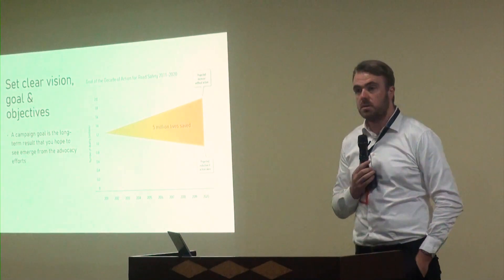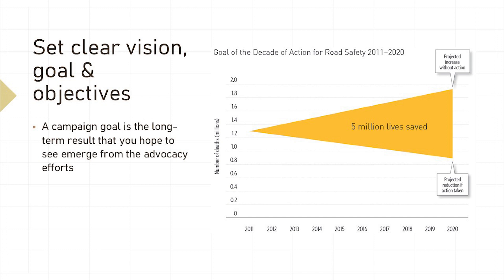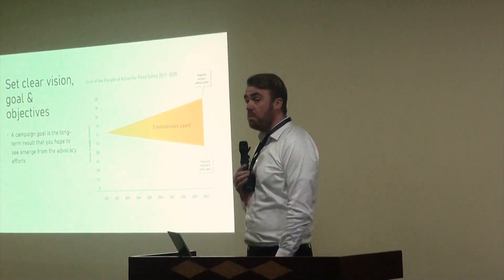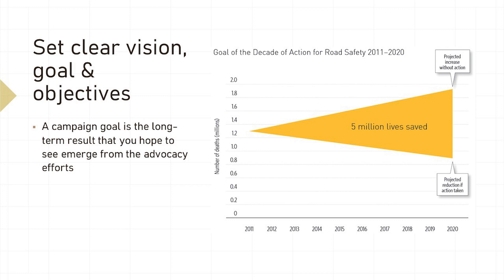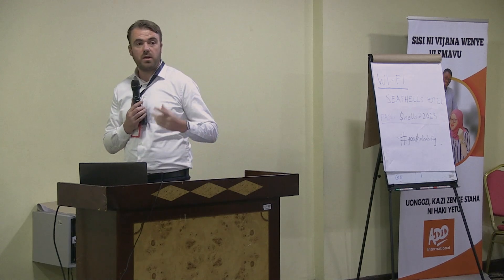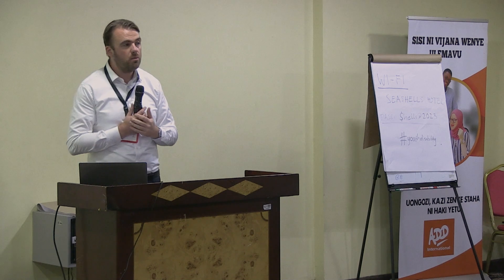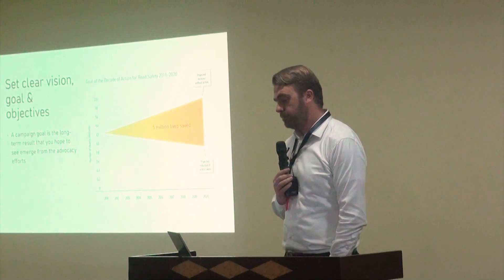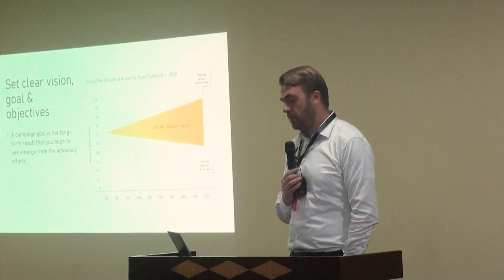Setting a clear vision for your advocacy work is a really important step. The next step is defining your goals — the long-term result you hope to see emerge from your advocacy efforts. There may be multiple advocacy campaigns that move towards a particular goal. For example, in the road traffic injury prevention field, a specific goal was to save 5 million lives on roads within 10 years.